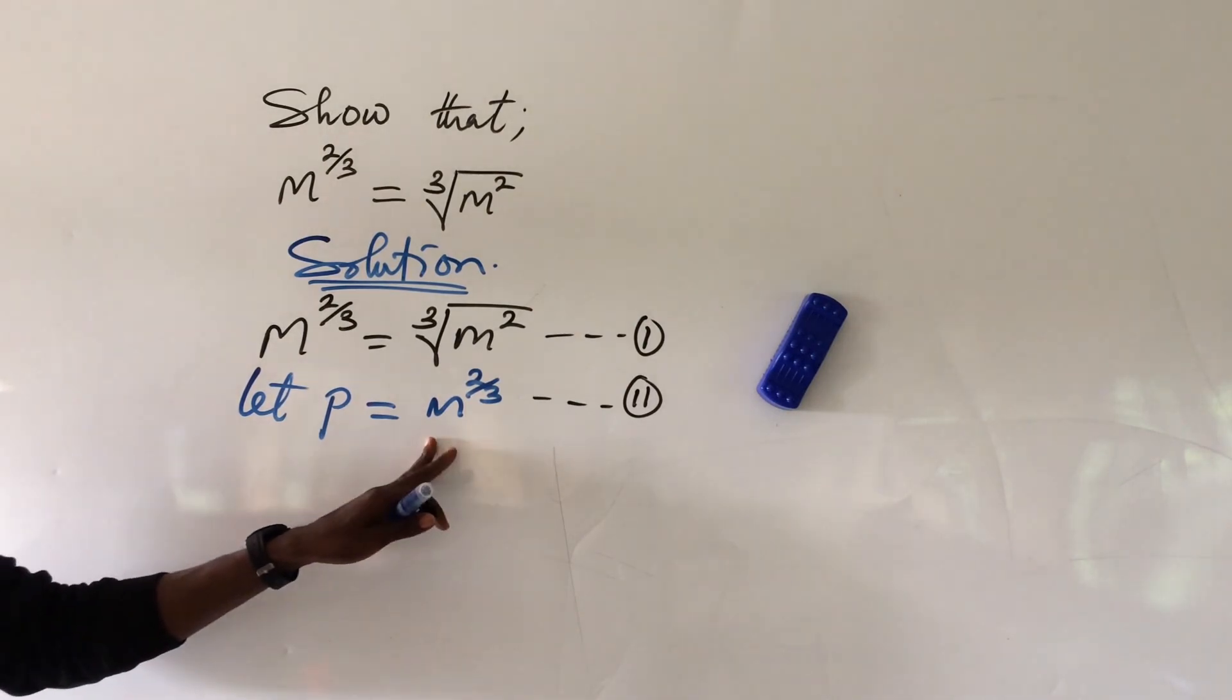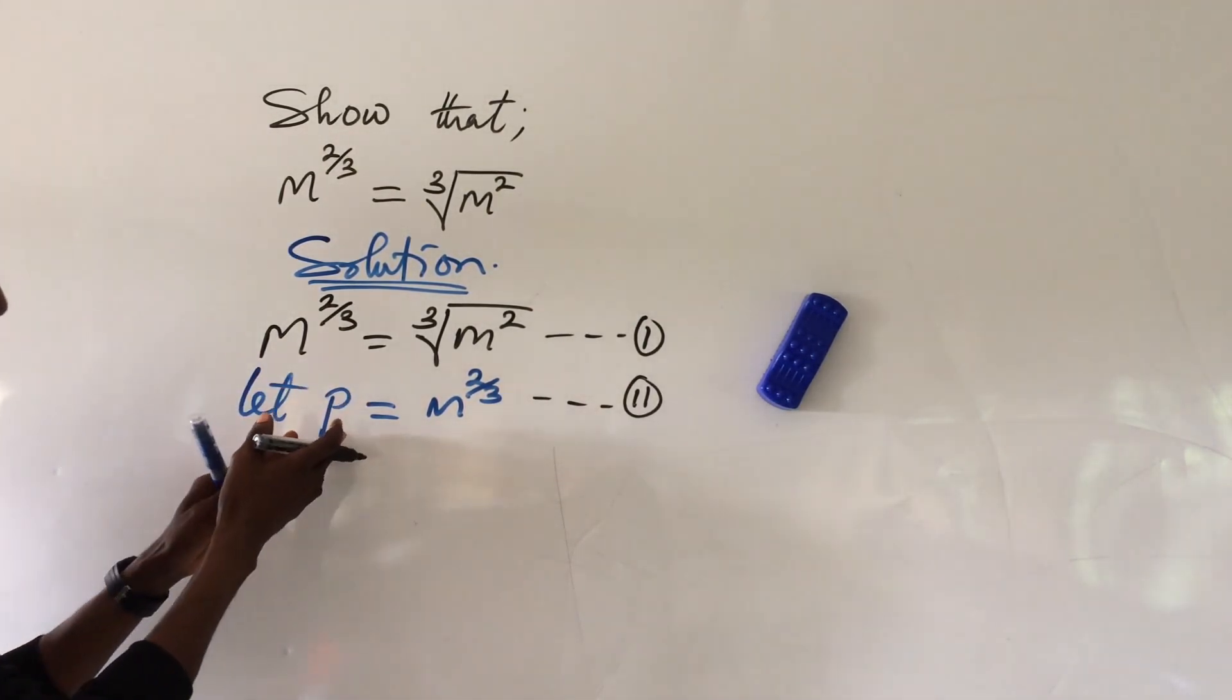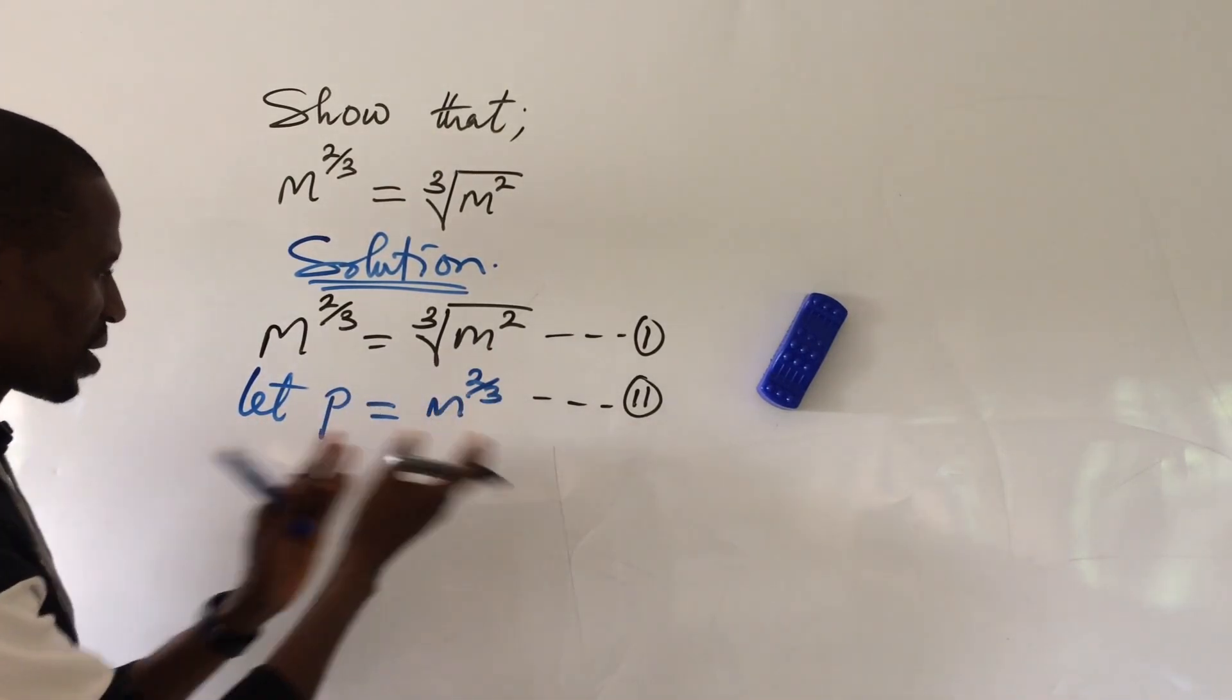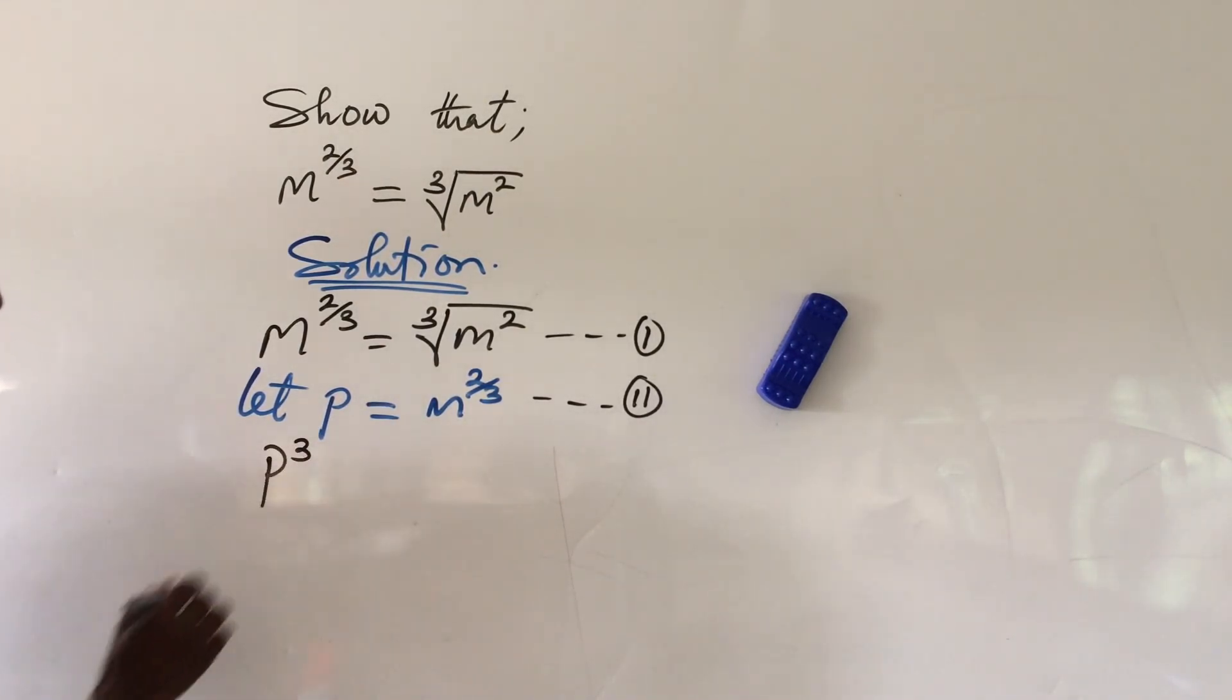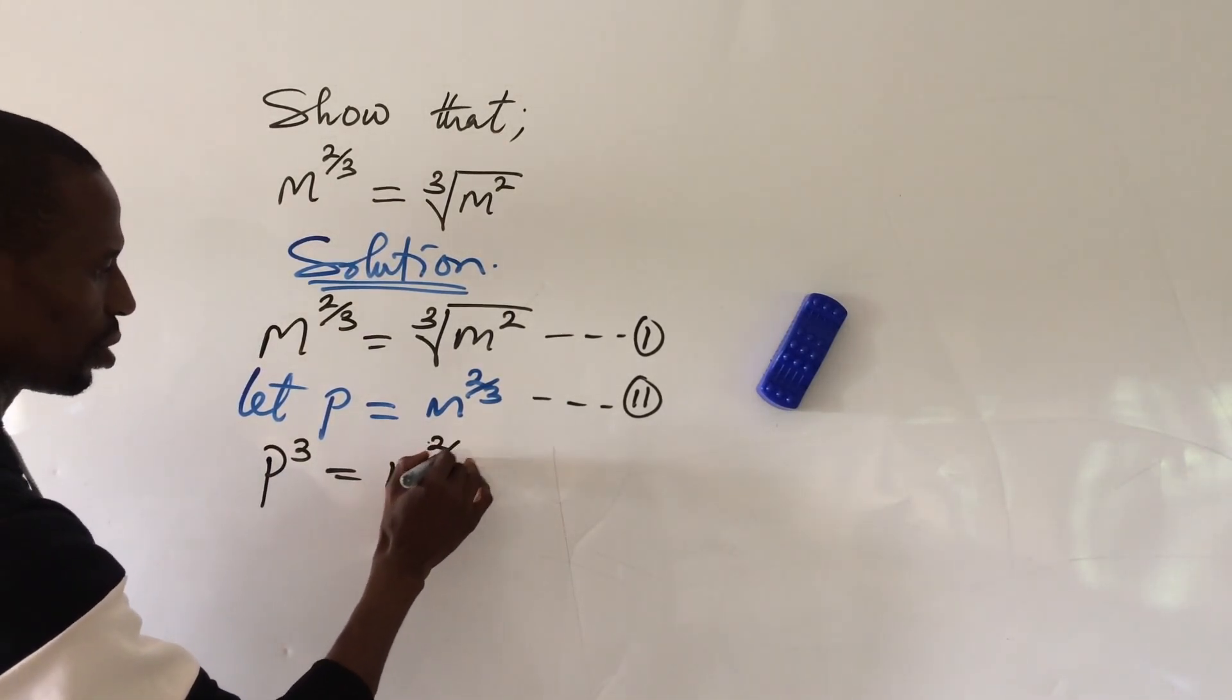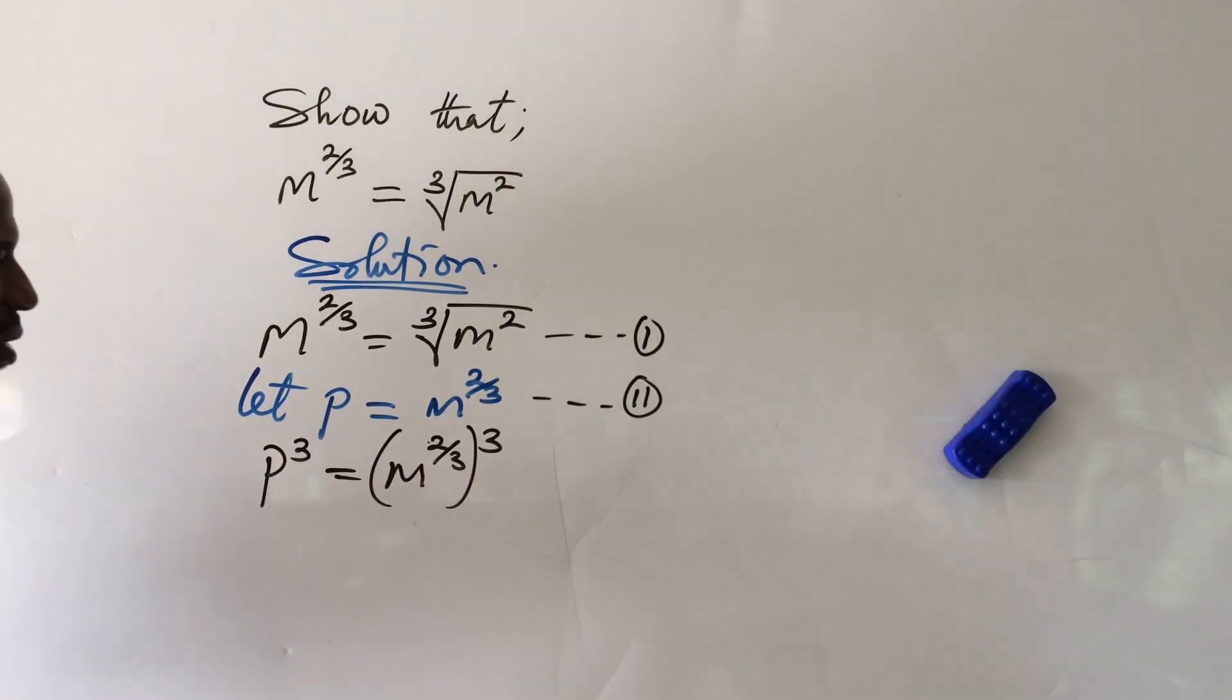If we look at equation 2, if I decide to cube this side of this equation, and at the same time I will also cube this side of the equation. Because whatever you do to the left-hand side, you must do to the right-hand side. And so if I have here to be p to the power of 3, this will equally give me m to the power of 2 all over 3 to the power of 3.